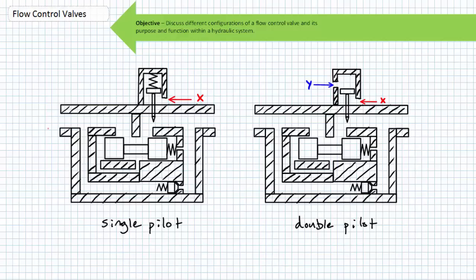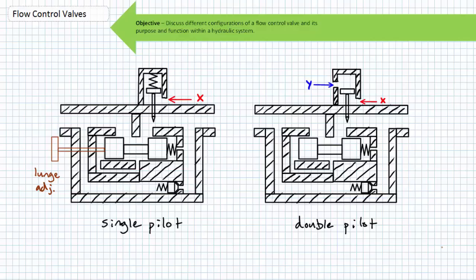A final note about pressure-compensated flow control valves: if this valve is run in reverse — especially one without a check valve bypass — the compensator spool will be fully displaced to one end of its passage. When the valve returns to metering direction, the compensator spool has to readjust before it can properly meter flow, meaning there is a brief moment when the actuator can lunge or jump. To account for this, some pressure-compensated flow control valves have an adjustable lunge control — an additional needle that keeps the compensator spool from drifting past a certain point, so it's in an ideal position and ready to control flow when direction reverses.